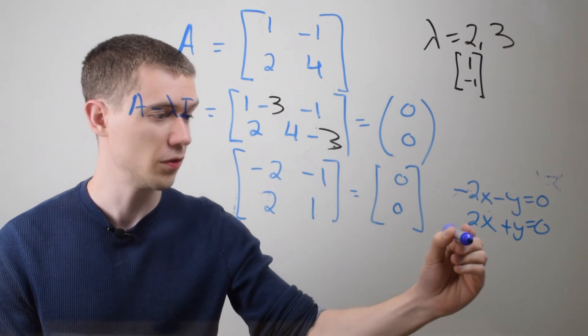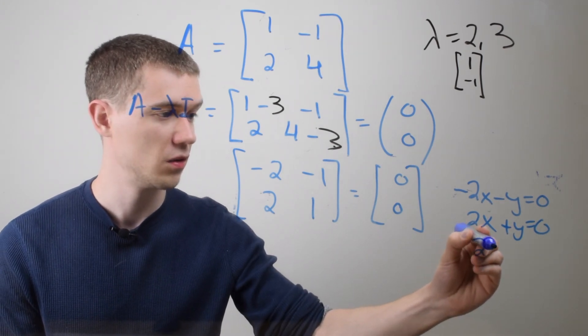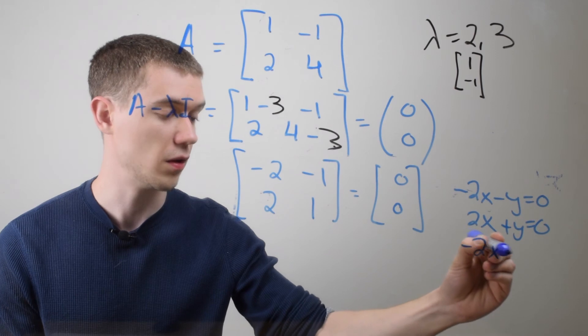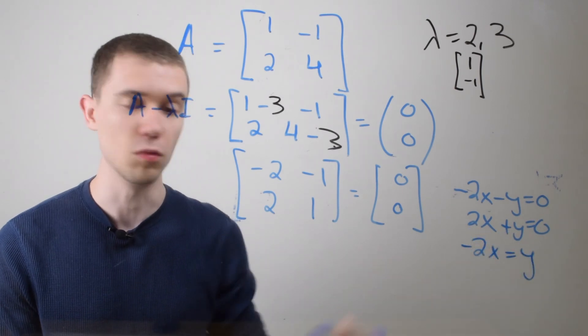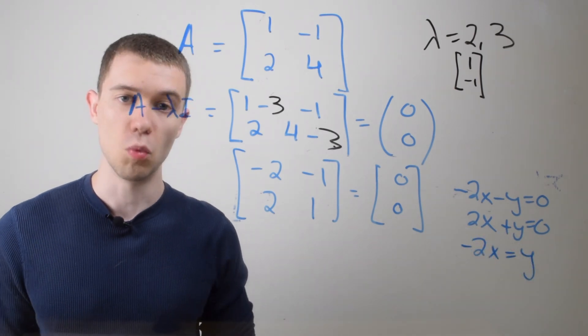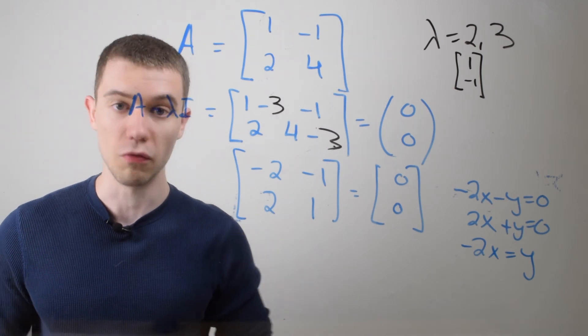And what does that mean? Well, this means that -2x is always going to equal y. So what kind of numbers solve those?